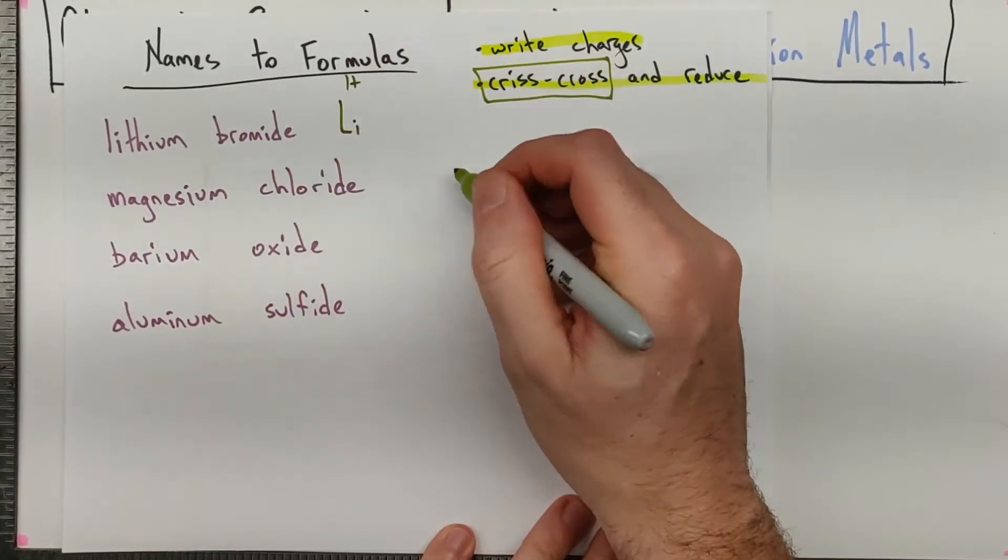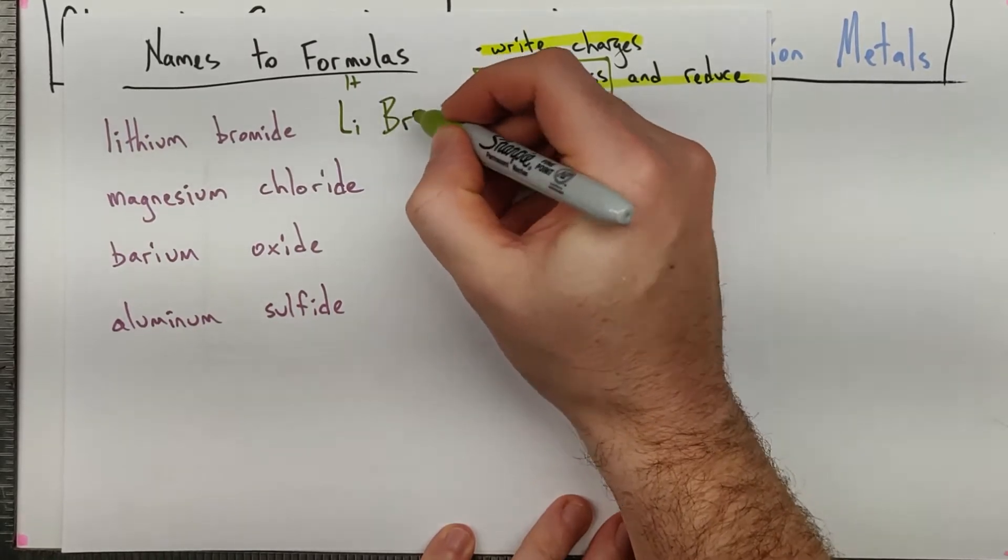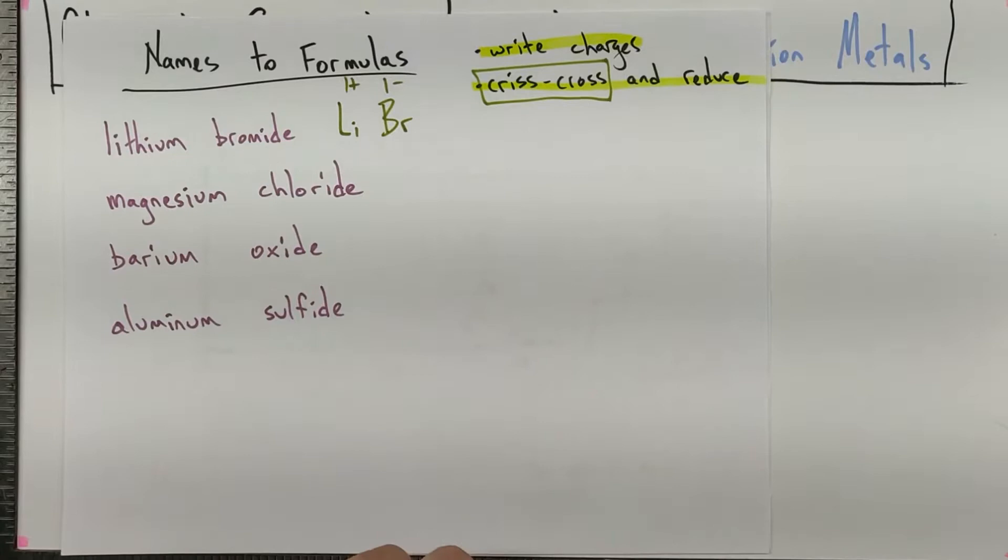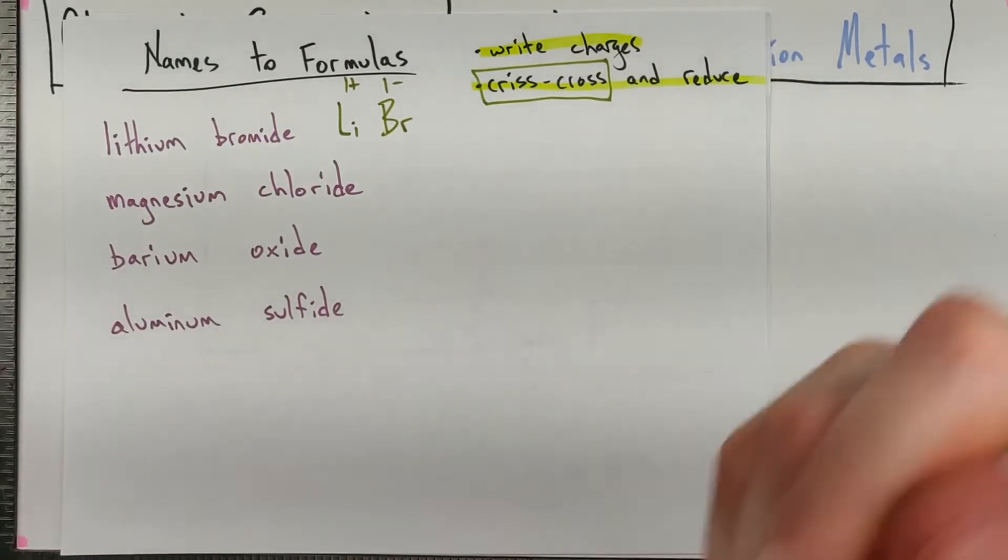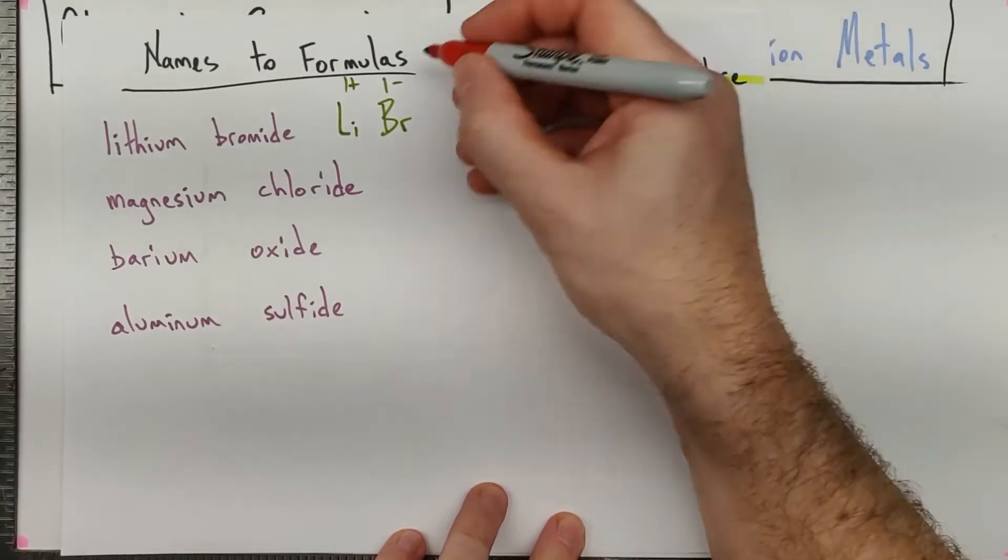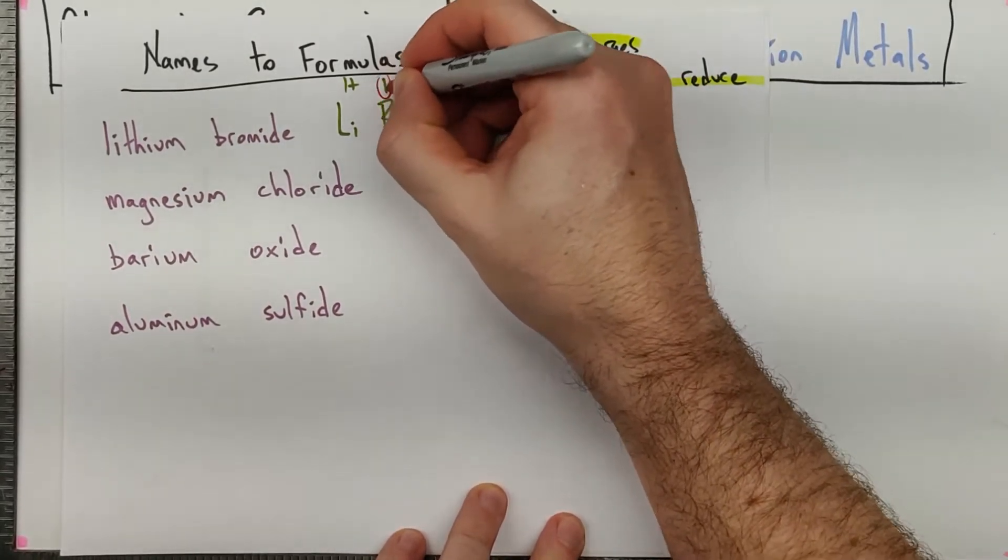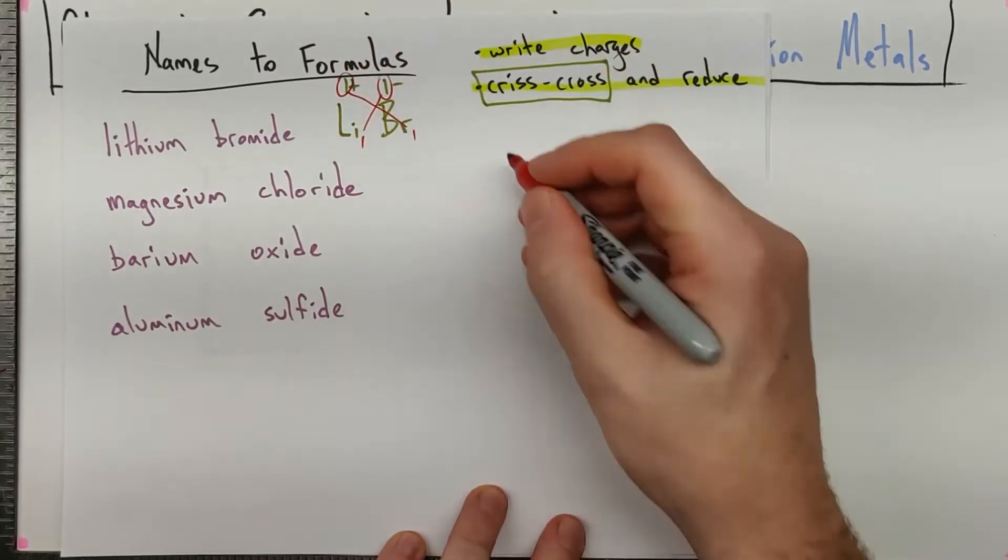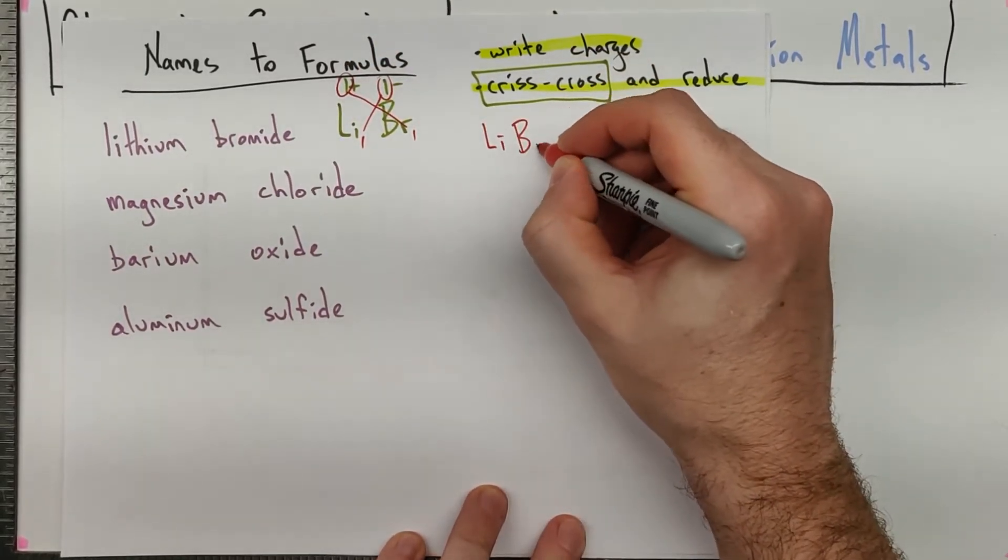Lithium is a 1 plus group 1 of the periodic table. Bromine is a 1 minus group 17 of the periodic table. And then we can just crisscross and reduce. What is the least common multiple of 1 and 1? It's 1. And again, we're ignoring the charge. We're only worried about the magnitude. So it's lithium bromide.